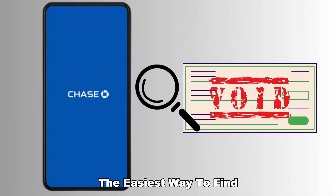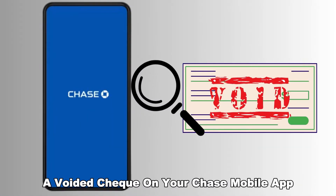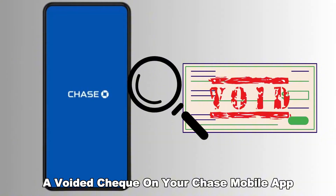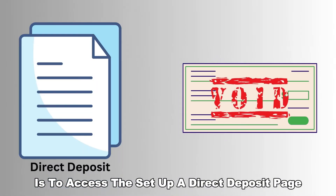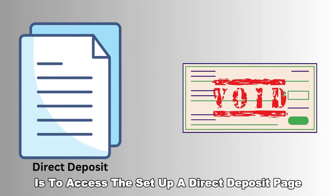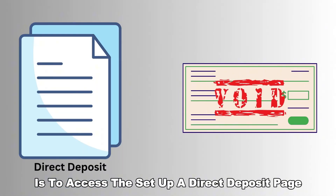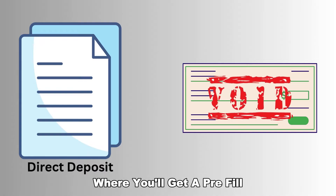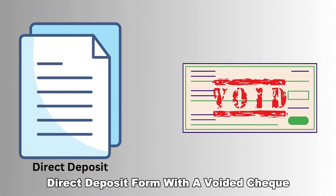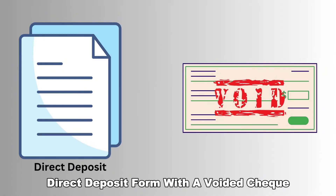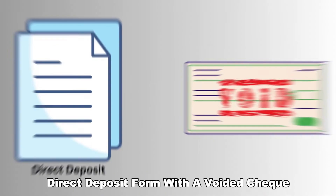The easiest way to find a voided check on your Chase mobile app is to access the Set Up a Direct Deposit page, where you'll get a pre-filled direct deposit form with a voided check.